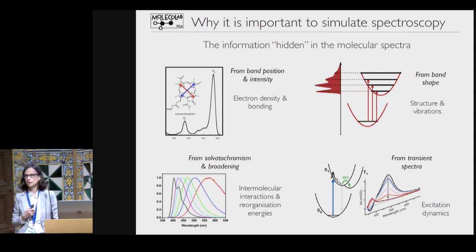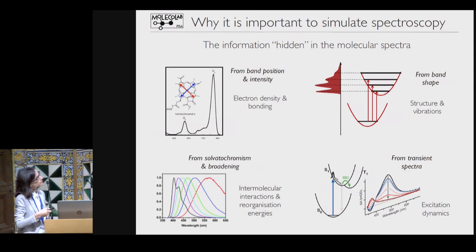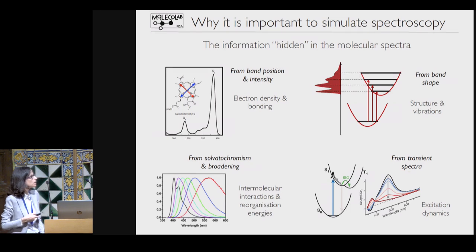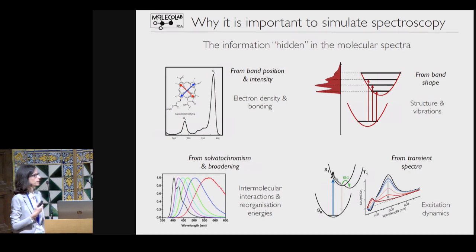If you think about a single molecule, from spectroscopy you can get information about a lot of things: the distribution of electrons, the bonding pattern, the structure through the vibrational aspects. You can also, if the system is solvated, try to understand intermolecular interactions, the reorganization energies from the solvatochromism and the broadening of the spectrum. And if you use transient spectroscopy, you can have access to excitation dynamics.